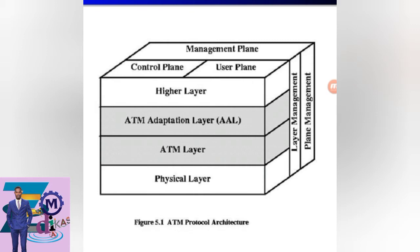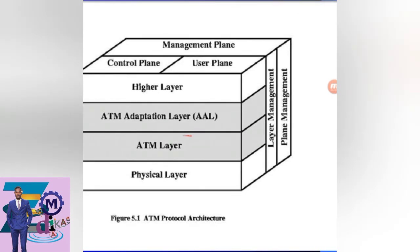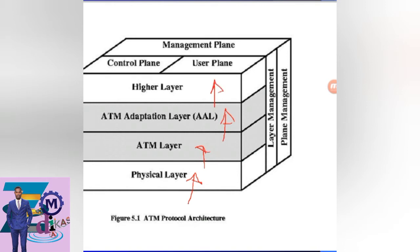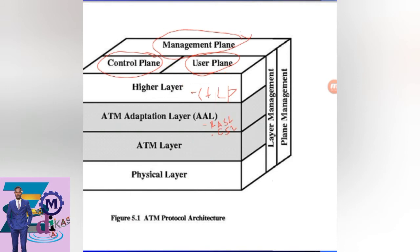Above the AAL is the higher protocol layer. The ATM layer itself is the main switch in the system. Looking at the layer sequence: first is the physical layer, then the ATM layer, then the ATM Adaptation Layer, and then the higher protocol layer.